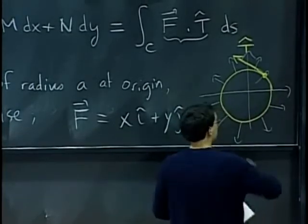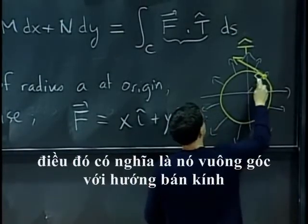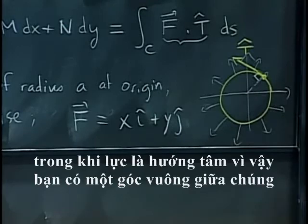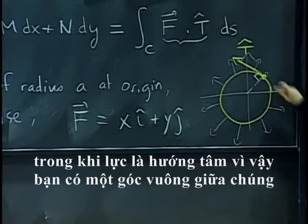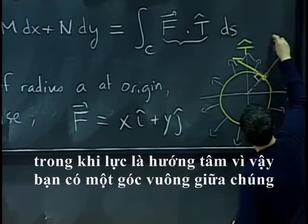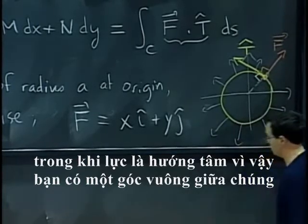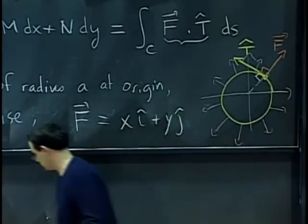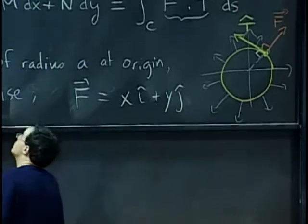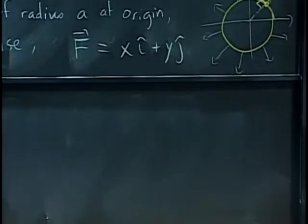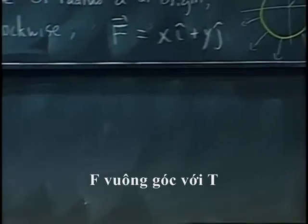That means it is perpendicular to the radial direction, while the field is perpendicular to the radial direction. So you have a right angle between them.